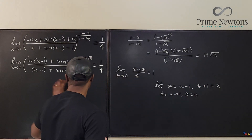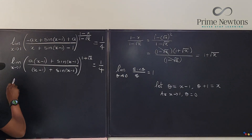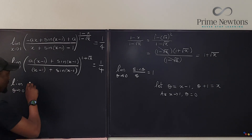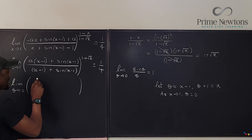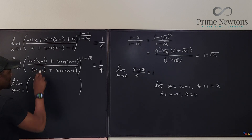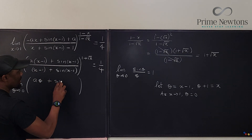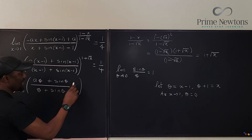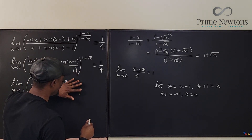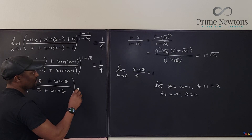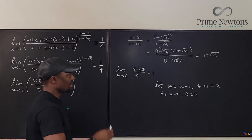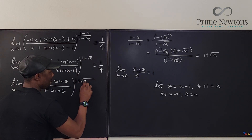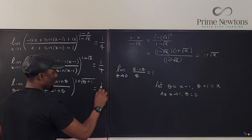So we've gotten another way to express this. We can say: this is the limit as theta goes to 0. What we have is now a times theta plus sine theta, over theta plus sine theta. And the new exponent — since x is theta plus 1 — is going to be 1 plus square root of theta plus 1. And everything equals 1 over 4.